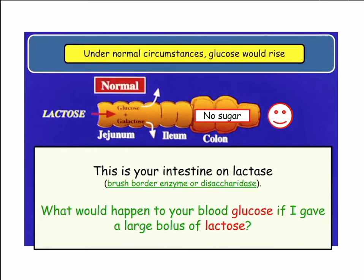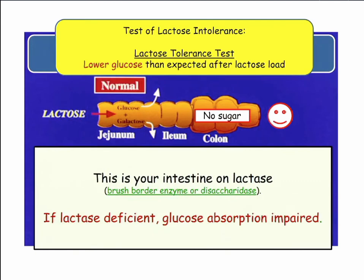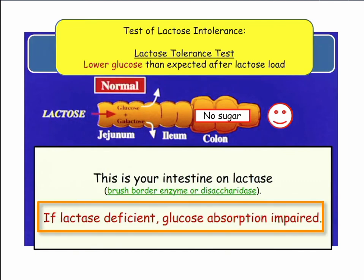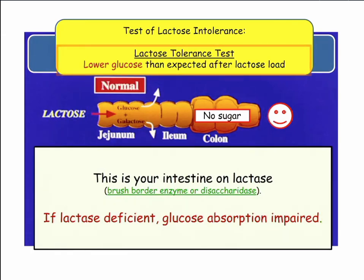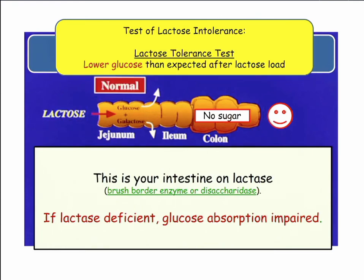The sugar's going to go up. Under normal circumstances, glucose would rise. But what if you don't have any lactase, brush border enzyme, or disaccharidase — lactase deficient? Glucose absorption is impaired. It's called the lactose tolerance test. You give a load of lactose and see what the sugar does. Does it go up? Because you need the enzyme to break down lactose into glucose and galactose. If you don't have the enzyme, glucose doesn't go up. That's one nifty little test.